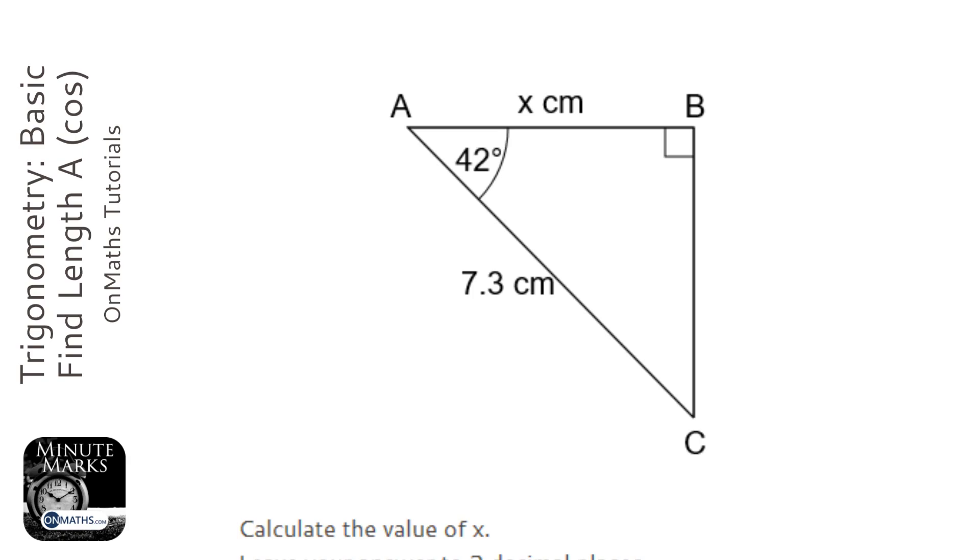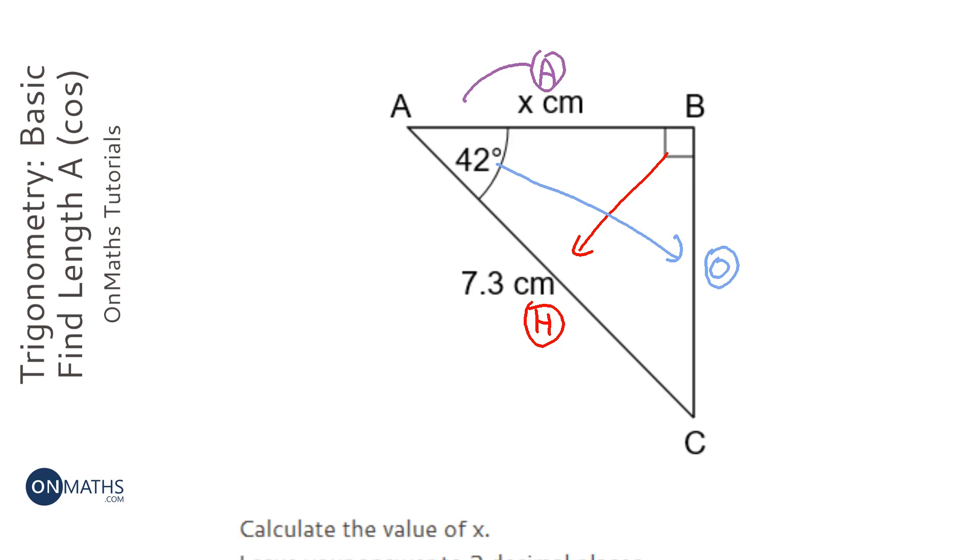The first stage of trigonometry is to label the sides. You go opposite the right angle and that's labeled the hypotenuse. Then you go opposite the marked angle - that's the one given to you in the question - and that's the opposite. Then you go between the marked angle and the right angle and that's the adjacent, the one left over.